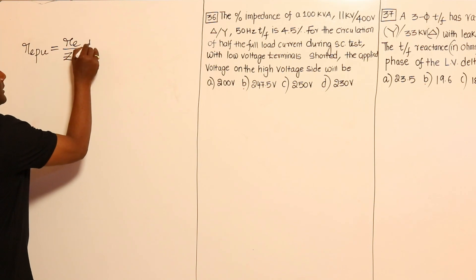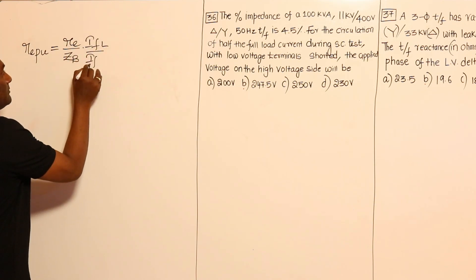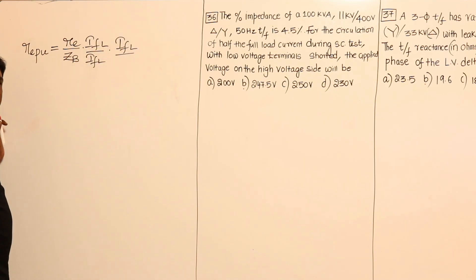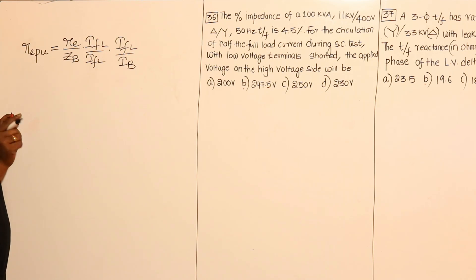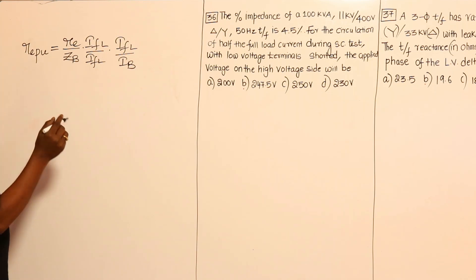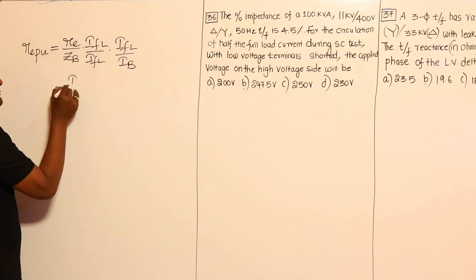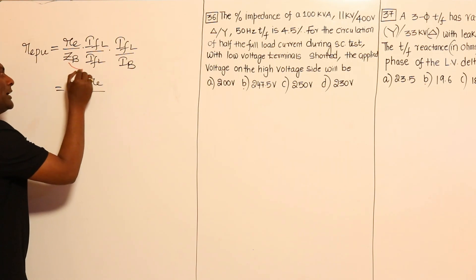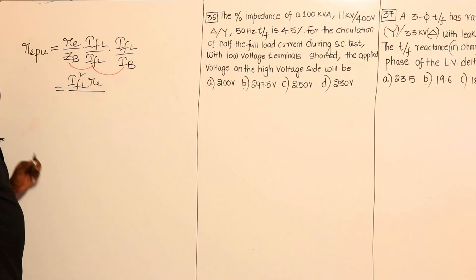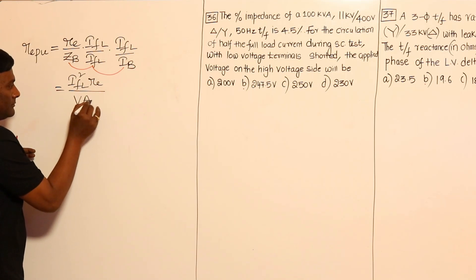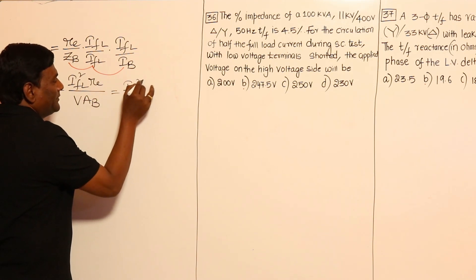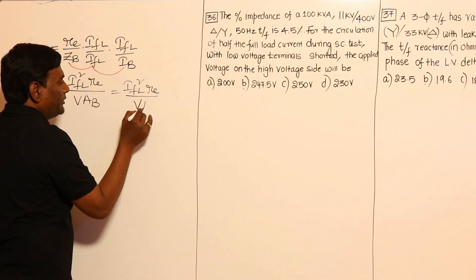Now, let me add IFL divided by I_base. IFL is the same as I_base — we previously derived that IFL equals I_base; full load current is nothing but the base value of current. So IFL² × Re divided by Z_base × I_base gives V_base, and V_base × I_base gives VA_base, which in a transformer is VA_rated. This becomes IFL² × Re divided by VA_rated.